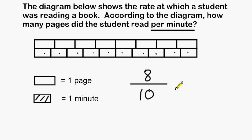Now the reason that we put minutes on the bottom is because with any unit rate problem, whatever is after the word per is the units that we divide by. And a fraction bar is the same thing as a division sign. So basically we have 8 pages divided by 10 minutes.